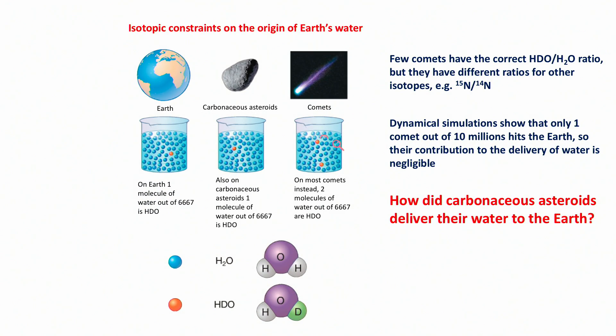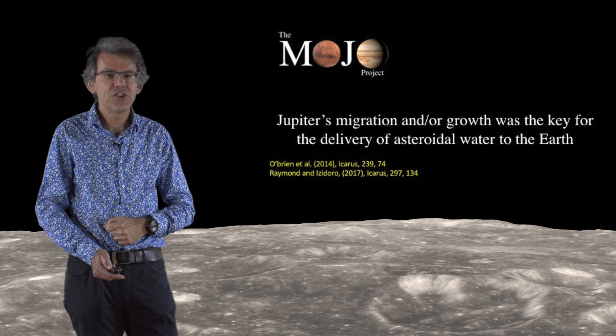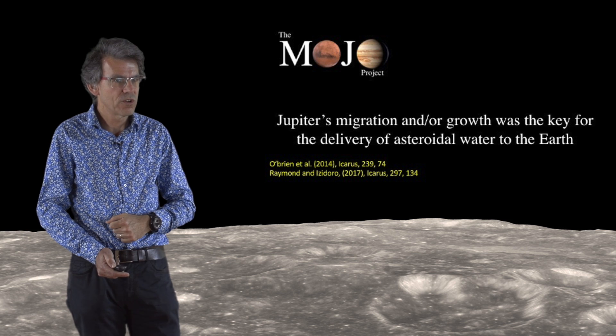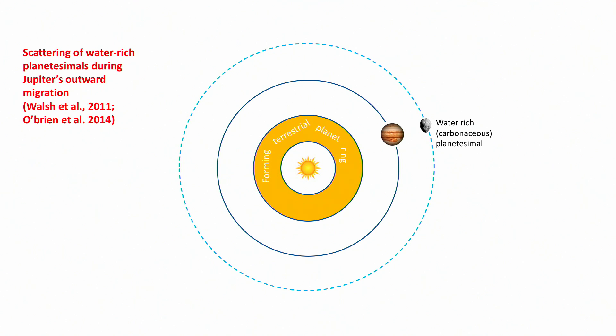So the important question is how did carbonaceous asteroids deliver their water to the Earth? In the Mojo project, we show that Jupiter's migration and Earth's growth was the key for the delivery of asteroidal water to the Earth. We have seen in part 5 that carbonaceous planetesimals are believed to have formed beyond the orbit of Jupiter. So we need to understand how they could go from beyond the orbit of Jupiter to the growing terrestrial planets.